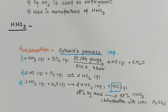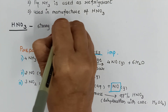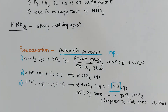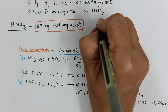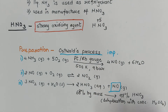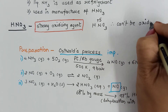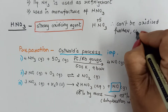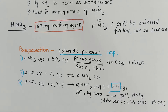Nitric acid is a strong oxidizing agent. In nitric acid, nitrogen is in its highest oxidation state of +5; therefore it cannot be oxidized further and can only be reduced. This is why nitric acid acts as a strong oxidizing agent.